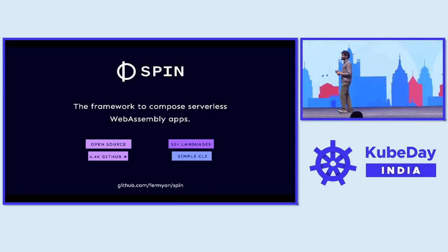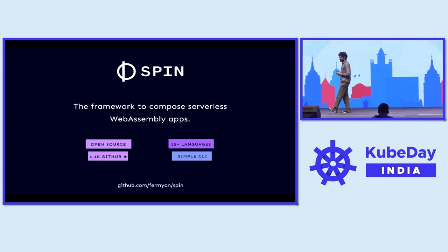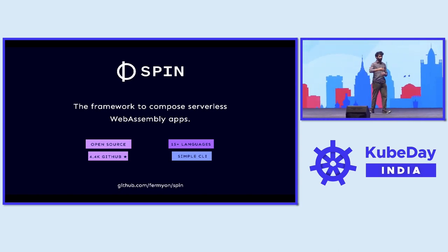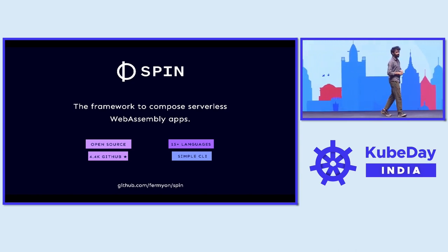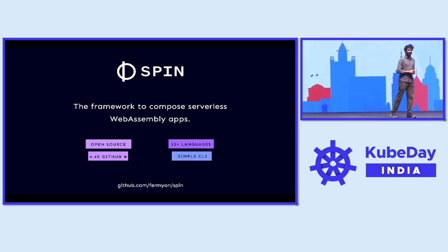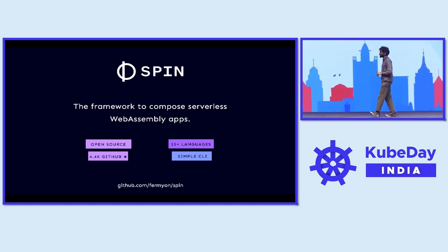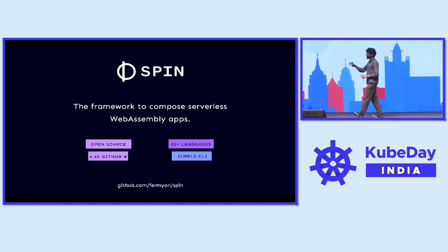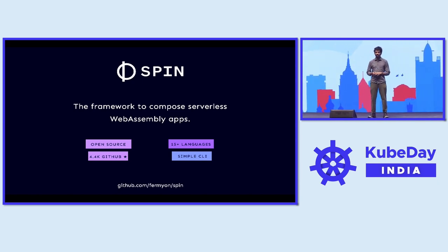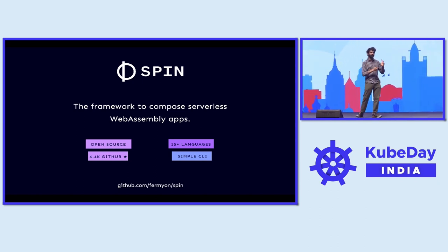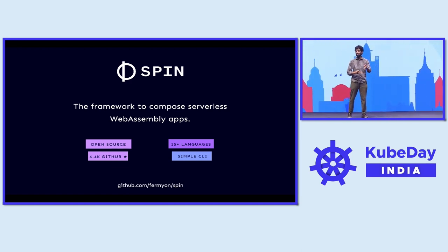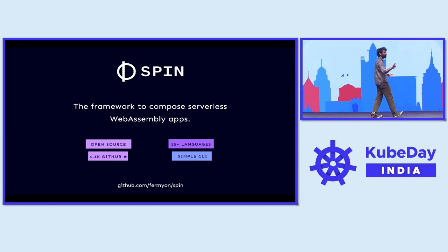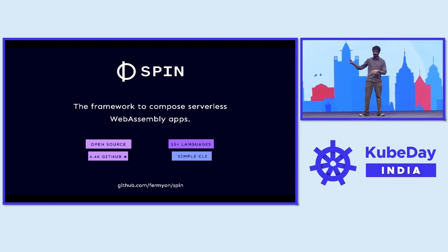The good thing about WebAssembly, and we're going to look at it through the lens of this open source framework called Spin. It's completely open source — check it out on GitHub, about 4,500 stars right now. It supports 15 plus languages. It's a framework to compose serverless WebAssembly apps. Some of the benchmarks comparing WebAssembly serverless versus other things in the market are done using Spin.